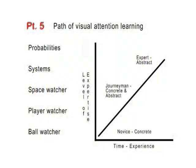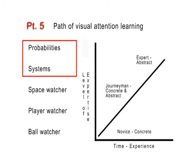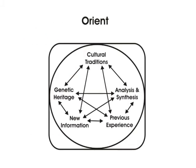This has significant implications for learning. As we saw in part five, ball and player watching are lower-level concerns. The higher levels, especially probabilities and systems, are the targets for deeper understanding and knowledge. We'll look at this next as we consider orientation — what Boyd called the Big O.